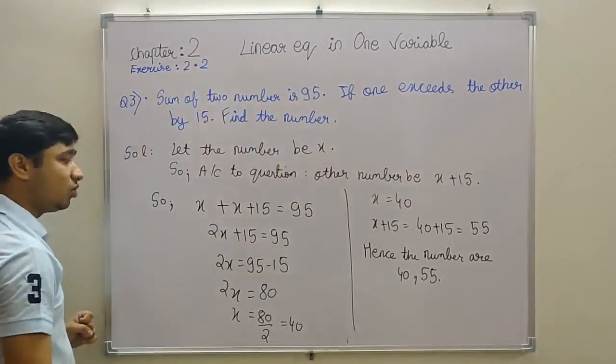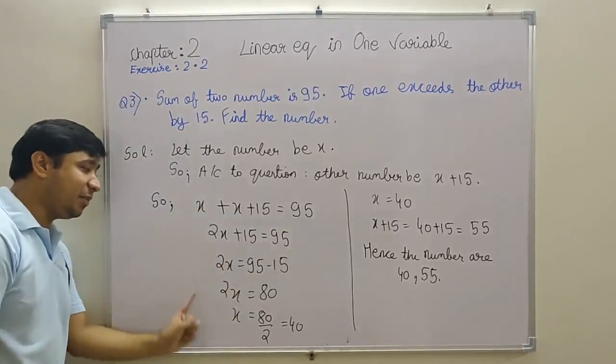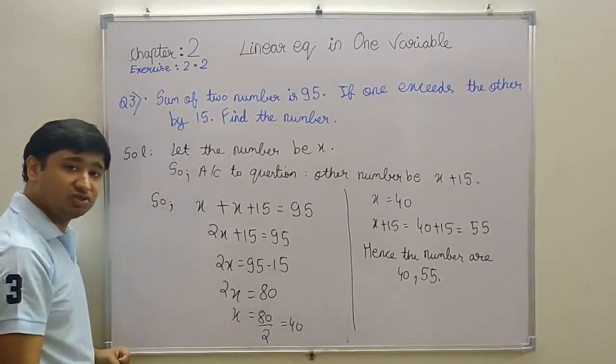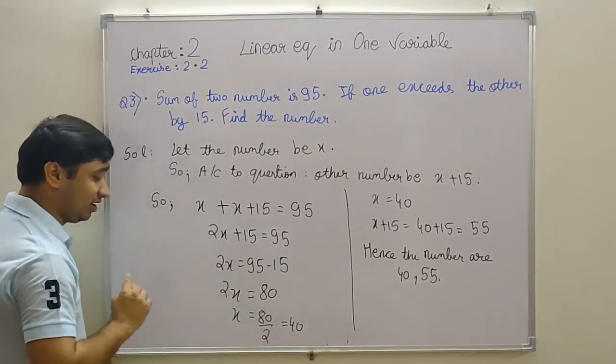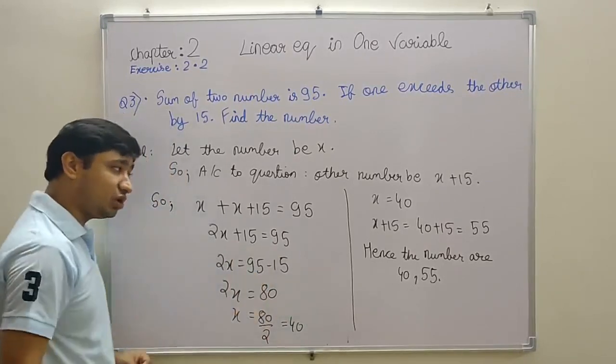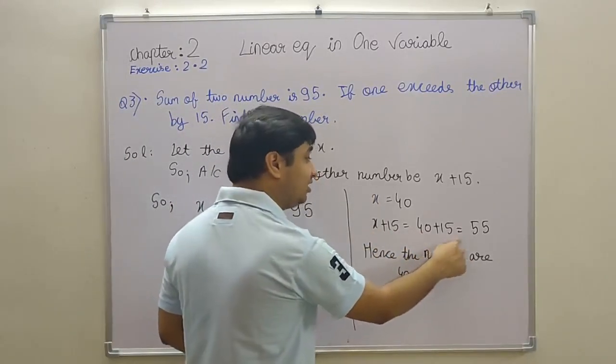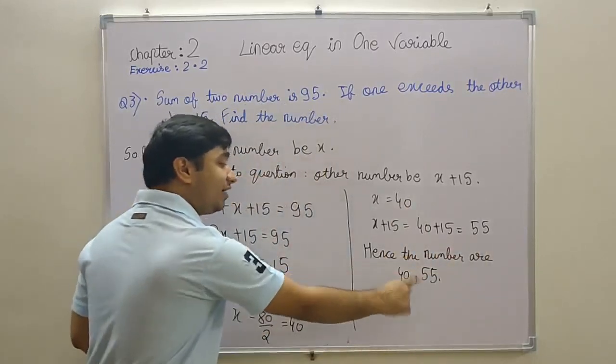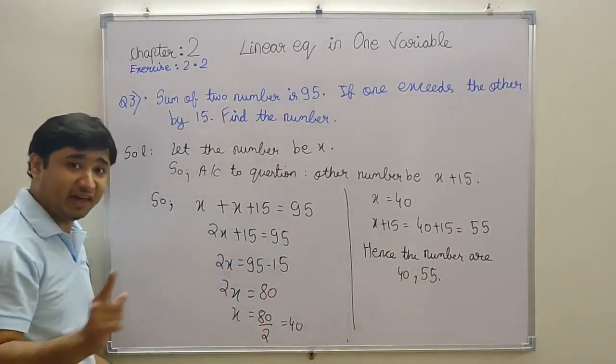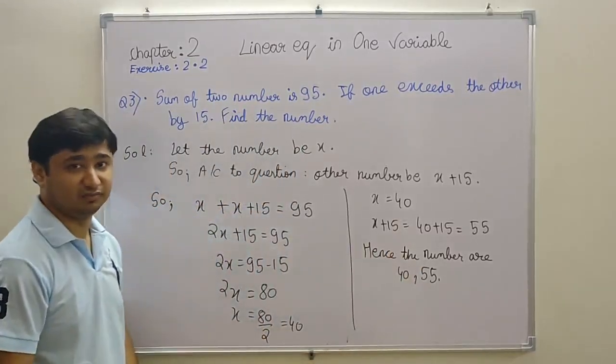So x plus x plus 15 equals 95, right? x plus x is 2x, plus 15 equals 95. Now you know how to solve this. Let's see. The 15 which is positive goes to the other side and becomes negative. 95 minus 15 comes to 80. When two things are in multiplication, they go to division on the other side. So 80 divided by 2 comes to 40. This is your first number, that is 40. What is the other one? That is x + 15: 40 plus 15, that is 55. Hence the two numbers are 40 and 55. So the first number is 40, the second number is 55.